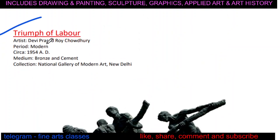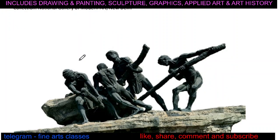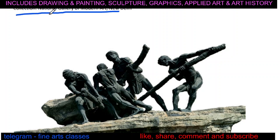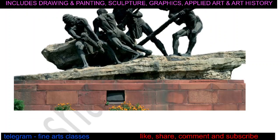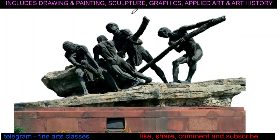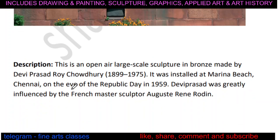The artist is DP Ray Chowdhury, from the modern period. The exact time period is 1954 AD. The medium is bronze and cement — it is made in bronze and cement. The collection is NGMA, that is the National Gallery of Modern Art, New Delhi. Let's move on to the description.